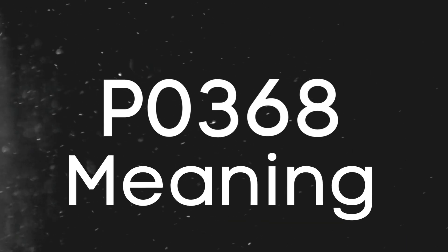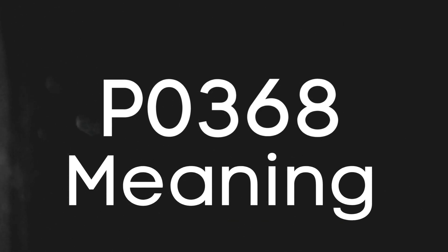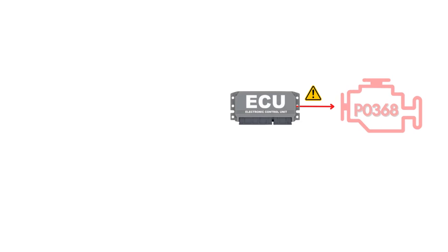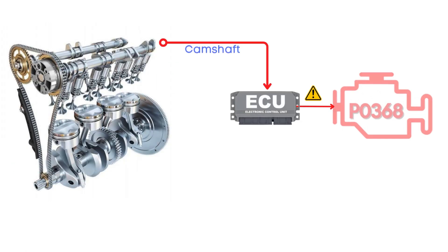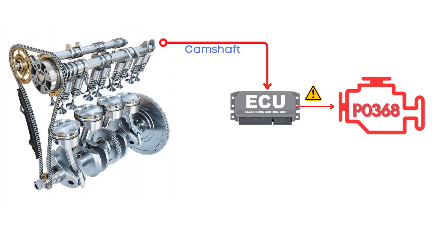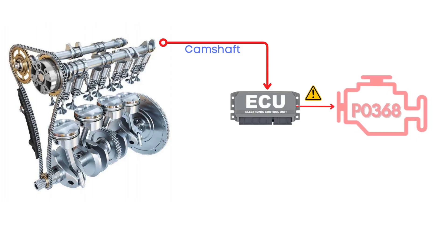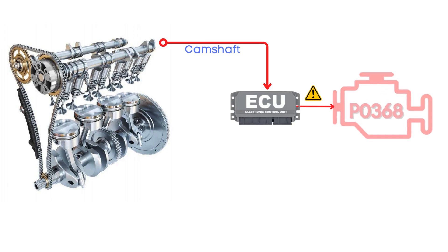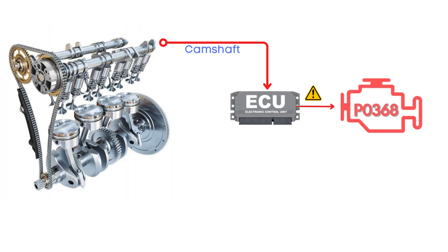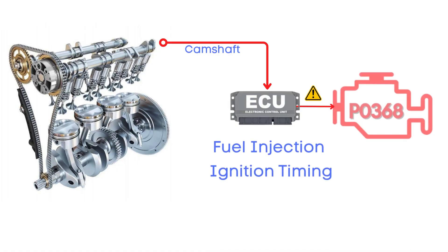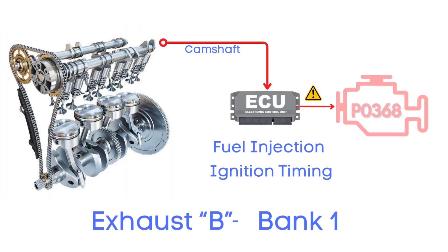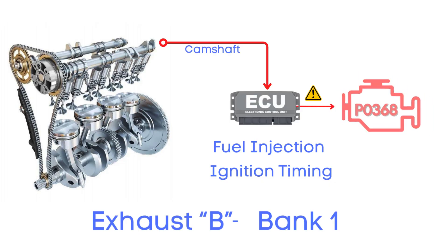First, let's understand what the P0368 code is. The P0368 code means that the ECM detects that the signal from the camshaft position sensor is outside the expected range, or too high. This sensor plays a super important role because it helps the ECM figure out the exact position of the camshaft, which it needs in order to manage fuel injection and ignition timing. It indicates an issue with the camshaft position circuit for bank one, specifically referring to the exhaust camshaft.